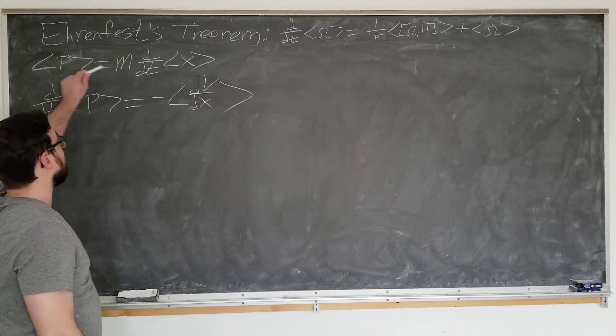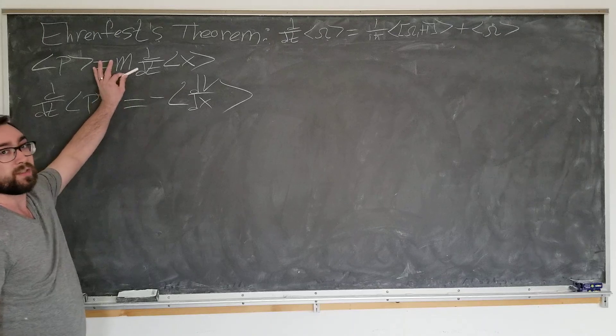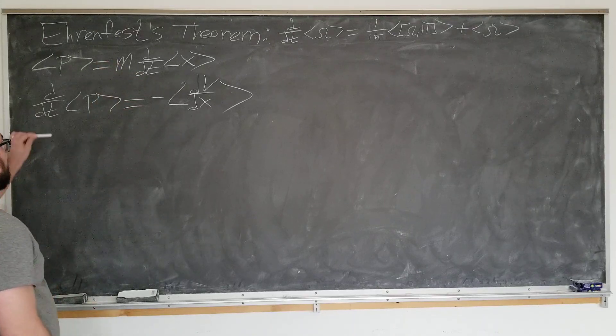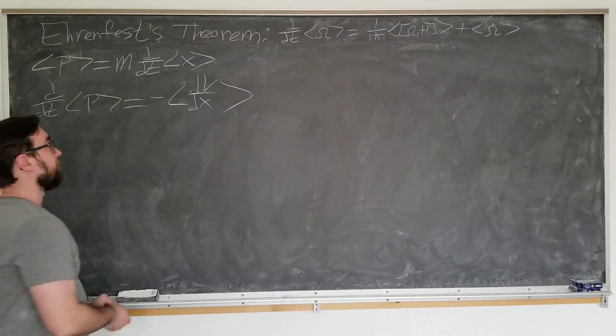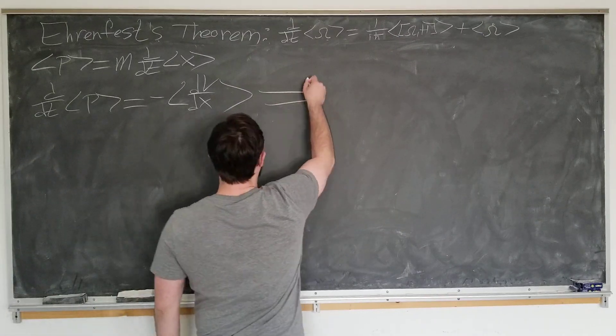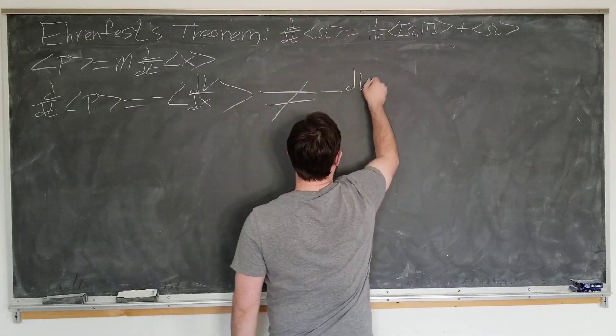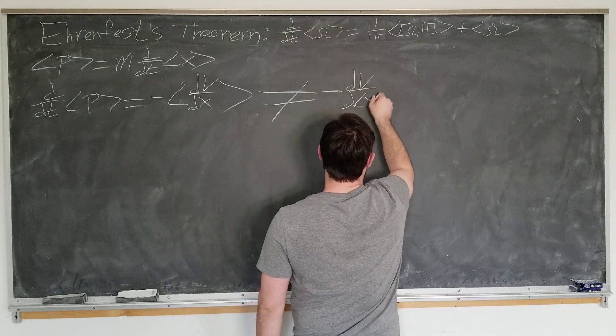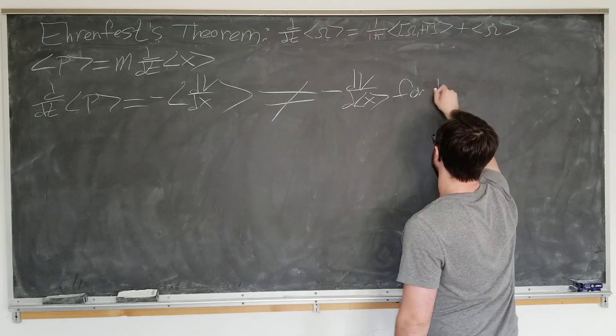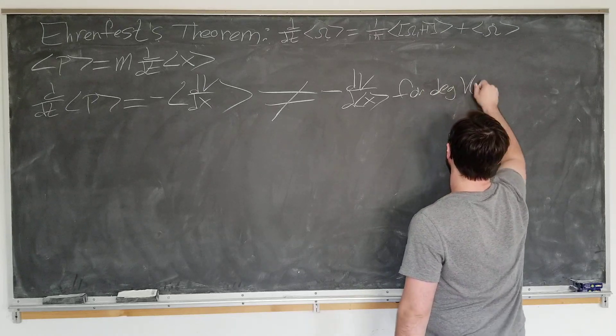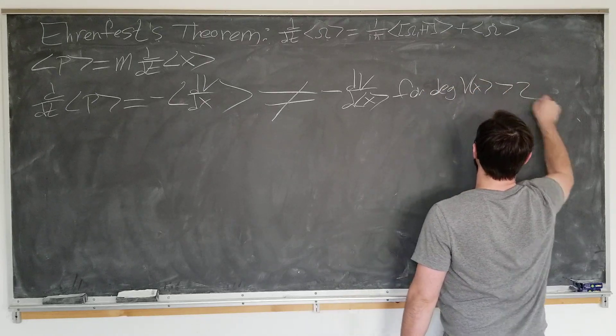We also know that d by dt expectation value of p is equal to minus dv by dx. Now, the first one is simpler, has an obvious implication. This one actually does obey classical laws. This one does not, since if it were truly to obey Newton's second law, this would actually have to be equal to minus dv by d bracket x, which is not true for any potential with a degree greater than 2.